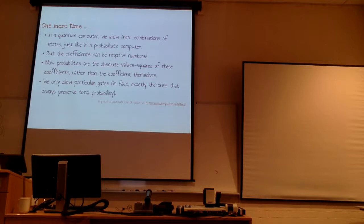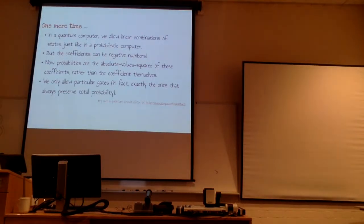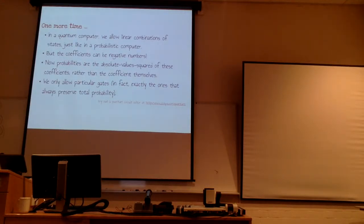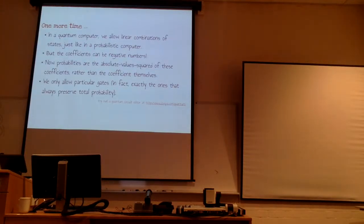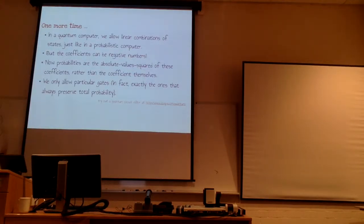So: quantum computers allow linear combinations of states, but the coefficients can be negative numbers. To interpret probabilities, we take the absolute value squared of these coefficients rather than the coefficients themselves. And while we only allow particular gates — the Hadamard and Toffoli — you can be a bit more flexible. Anything that preserves these rules is allowed and determines a valid notion of quantum computation.